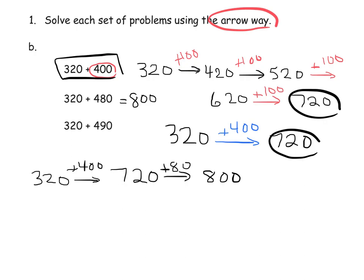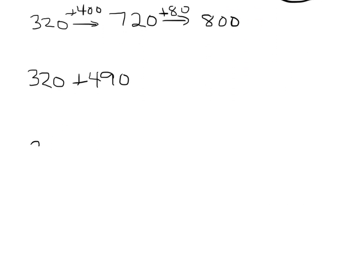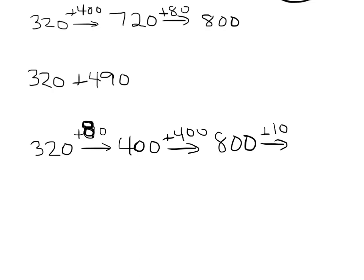And then the last one would be 320 plus 490. So starting with 320, I might start by adding 70. And that would give me the next, no, not 70, 80. Let's make that an 8. And that gives me the next milestone number of 400. And then I could add 400. So that gives me 800. And then I can add in my final 10. And I could get 810.